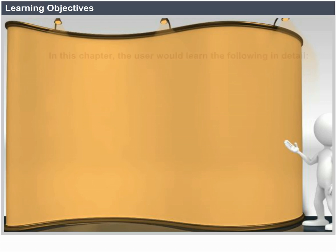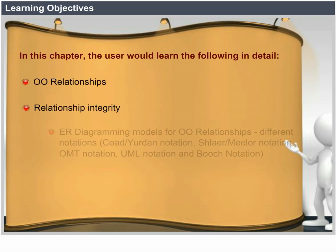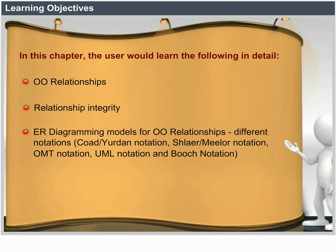In this chapter, the user would learn the following in detail: object-oriented relationships, relationship integrity, ER diagramming models for object-oriented relationships, and different notations — Goed-Udon notation, Schler-Millard notation, OMT notation, UML notation, and Booch notation — as well as integrating objects into a relational database.